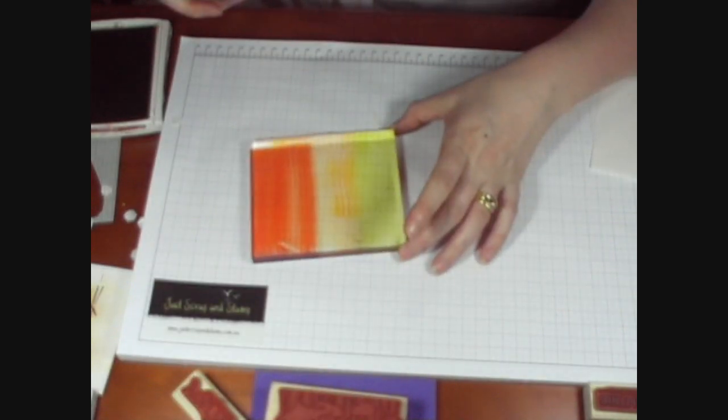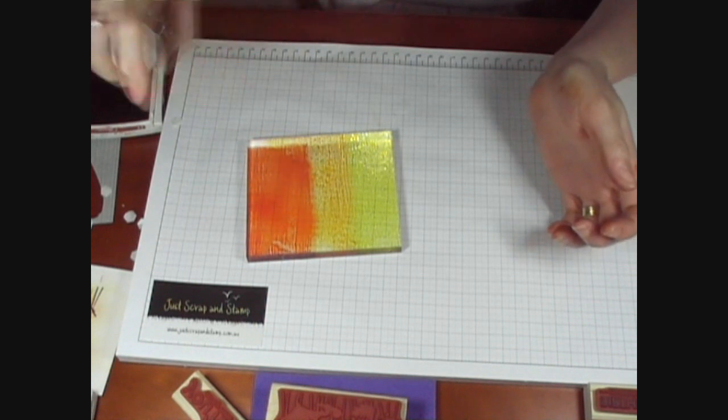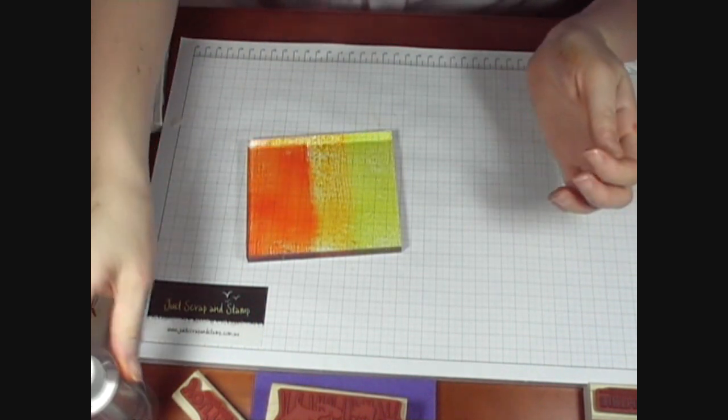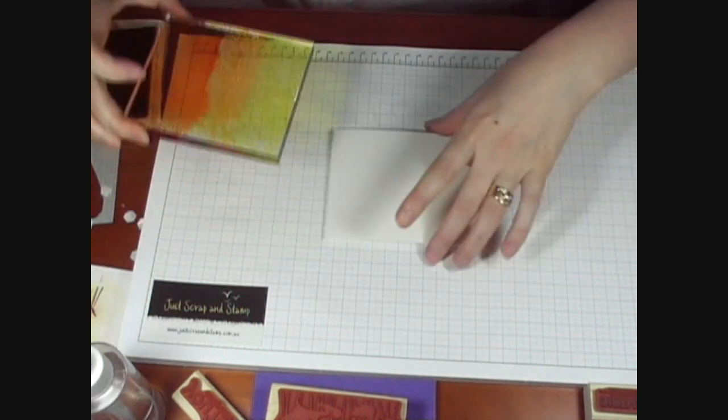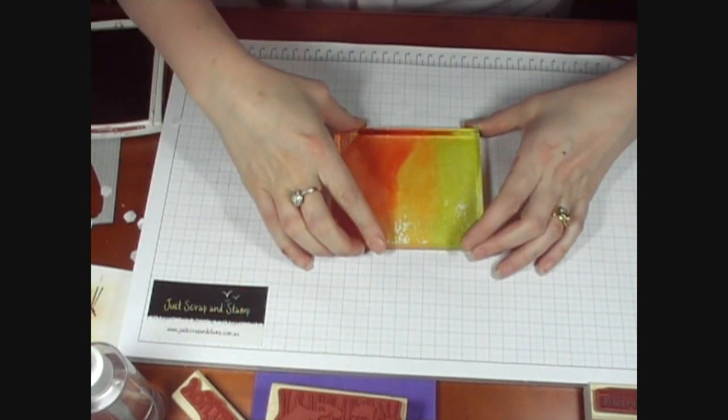We're going to give it a really good coat of water. Just spray the block evenly until you've got a very wet surface. Then just simply turn your block over and lay onto your watercolor paper.